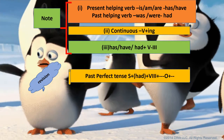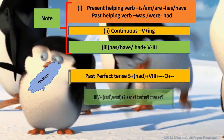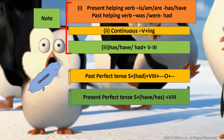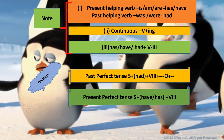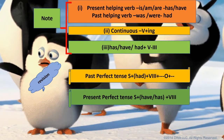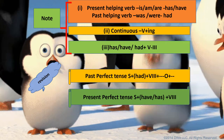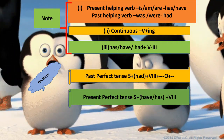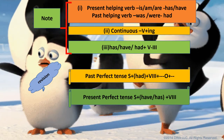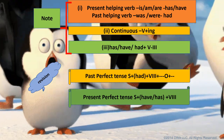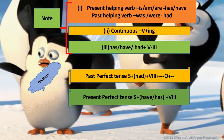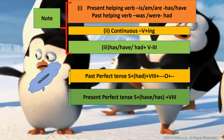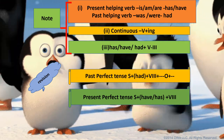For past perfect tense, the formula is: subject + had + V3. For present perfect tense, you use has or have depending on singular or plural subject. If the subject is singular like 'she', use has; if plural like 'they/we', use have. For example: 'they have cooked' — V3 form.